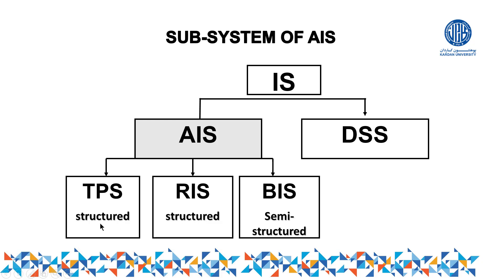Now let us discuss why TPS and RIS are called structured. Anything linked with the past, that is mechanical and repeating in nature, and that deals only with the past, can be called structured. TPS is a structured process because in accounting you simply record debits and credits — you record what happened in the past without thinking about the future. RIS, the reporting system, is also based on the past since reports are always generated for past data.